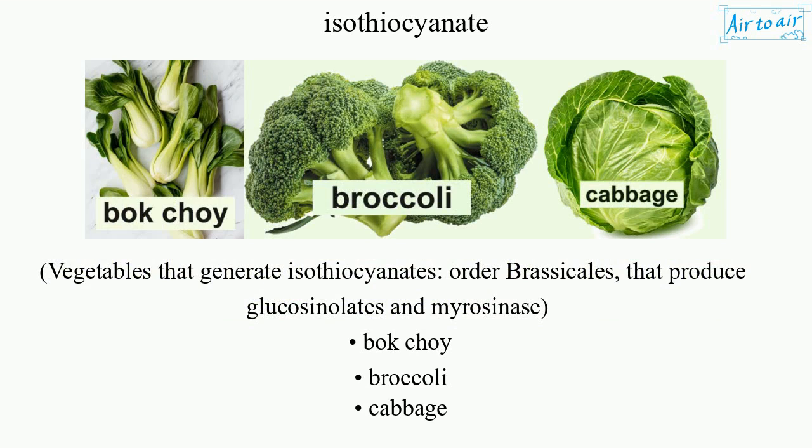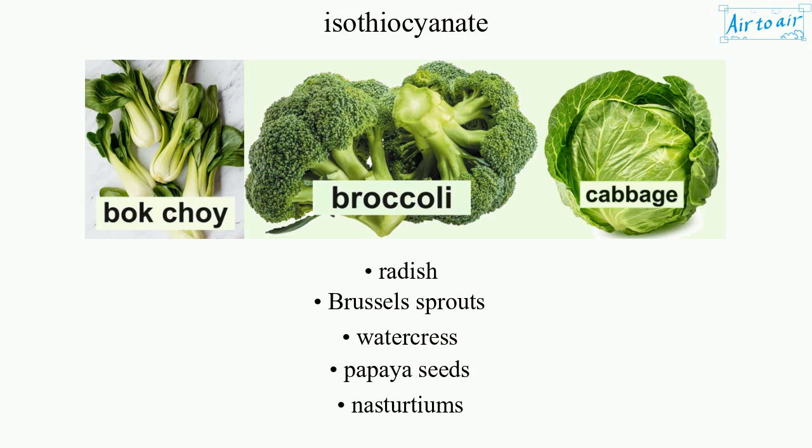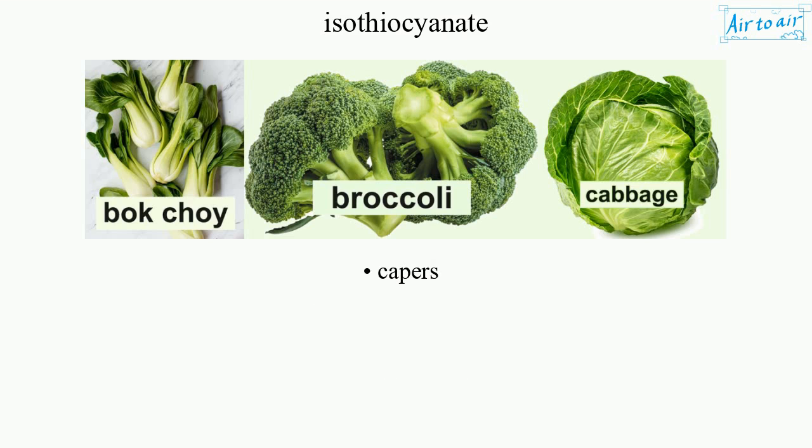Vegetables that generate isothiocyanates — order Brassicales — that produce glucosinolates and myrosinase: bok choy, broccoli, cabbage, cauliflower, kale, wasabi, horseradish, mustard, radish, Brussels sprouts, watercress, papaya seeds, nasturtiums, capers.